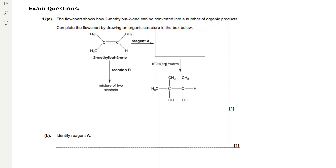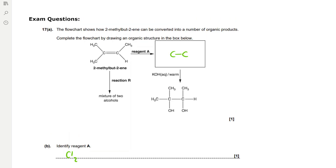For the exam question: a flowchart shows how 2-methylbutene can be converted into a number of organic products. We start with 2-methylbutene, an alkene, and reagent A forms a product which reacts with potassium hydroxide to form a diol. This likely means nucleophilic substitution by potassium hydroxide to form the alcohol from a dihalogenoalkane. To get the dihalogenoalkane we react the alkene with a halogen, for example chlorine.